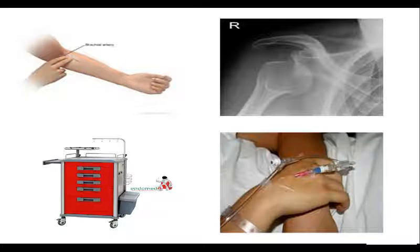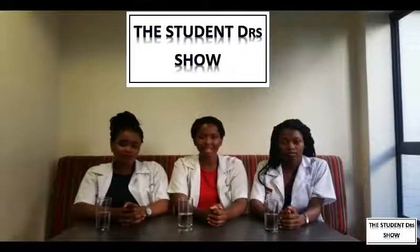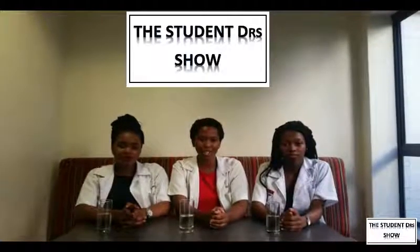After the reduction, check the neurovascular status of the arm again. X-ray the shoulder after the reduction as well to ensure that no fractures were caused by the reduction maneuvers. Now that we've discussed the anatomy, different types of shoulder dislocations and investigations, we'll demonstrate the maneuvers involved in relocating dislocated shoulders.